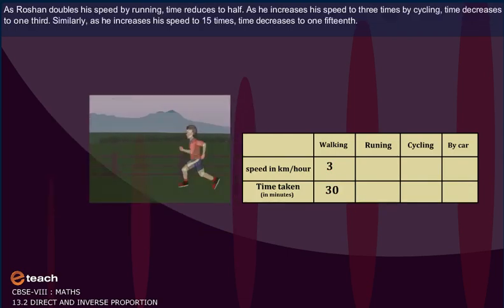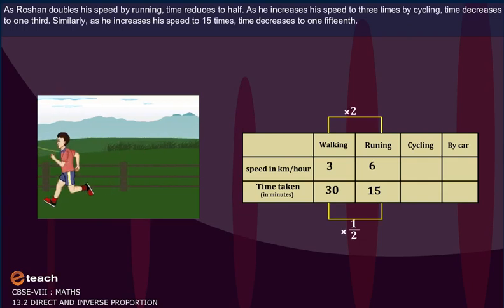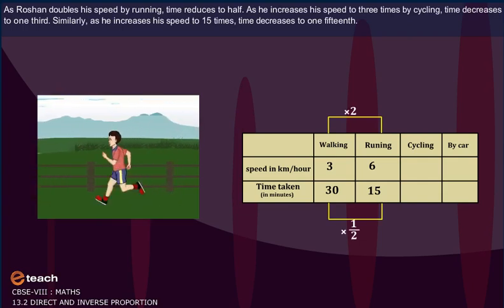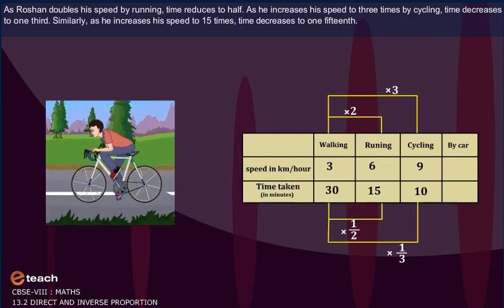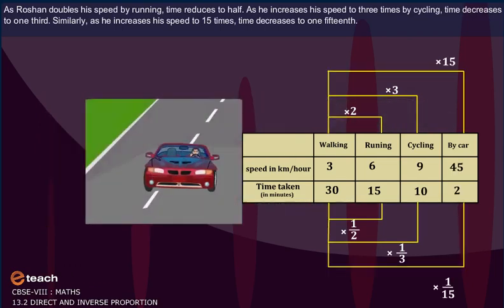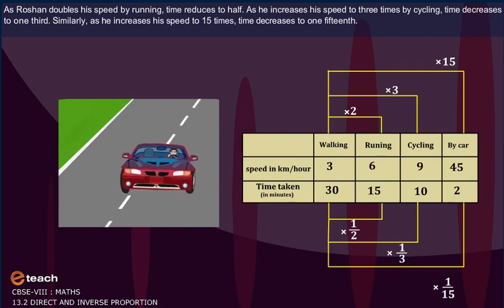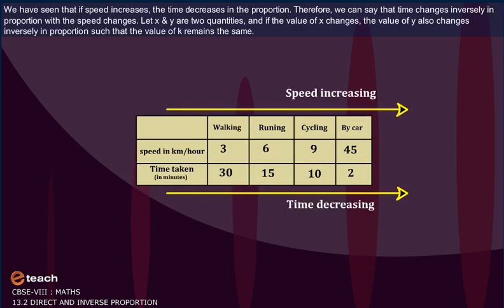As Roshan doubles his speed by running, time reduces to half. As he increases his speed to 3 times by cycling, time decreases to one-third. Similarly, as he increases his speed to 15 times, time decreases to one-fifteenth. We have seen that if speed increases, the time decreases in proportion.